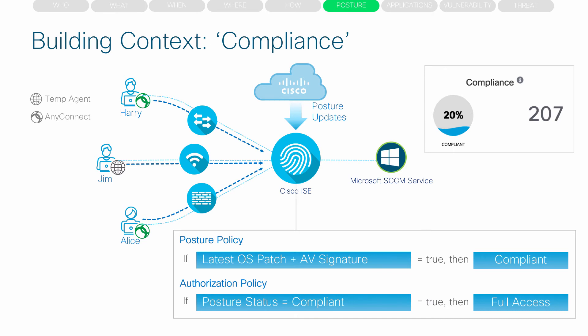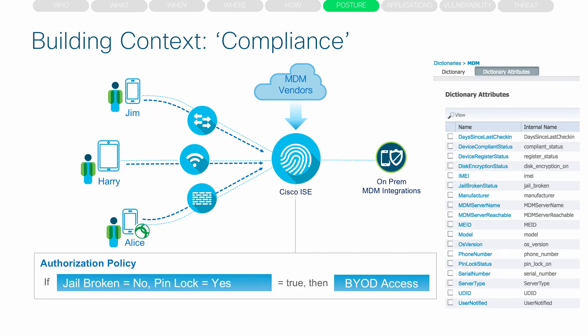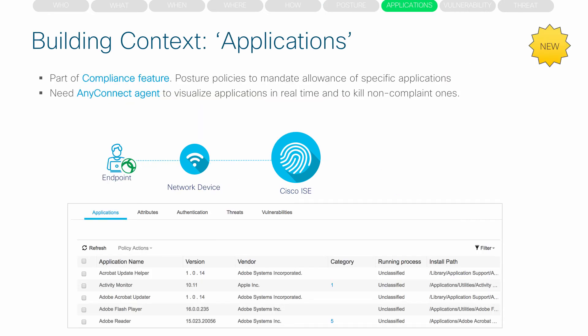The authorization policy can be defined to act on the posture result. If someone is compliant, we can provide full access; if not, we can provide access to the remediation services. Compliance for mobile devices is done by integrating ICE with mobile device management solutions — we can check on pin lock, jailbroken status, and much more. The posture functionality also allows us to list all applications installed and running on the endpoint, and we can initiate a kill or uninstall function for specific applications right from the ICE dashboard.